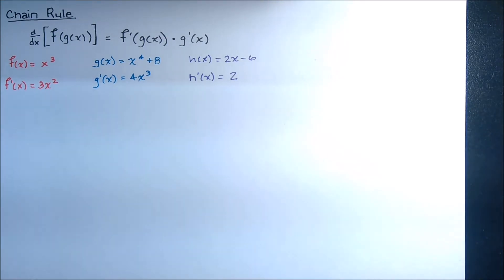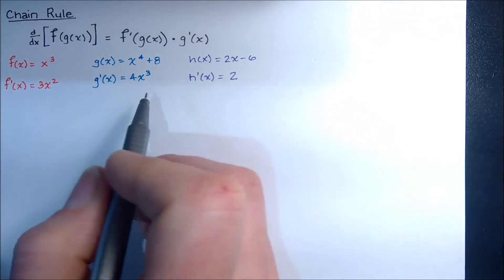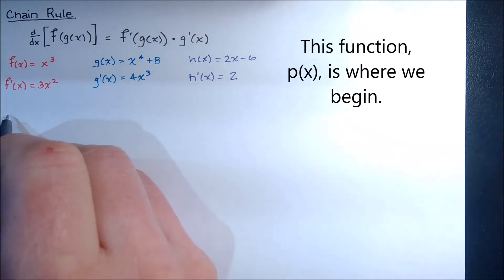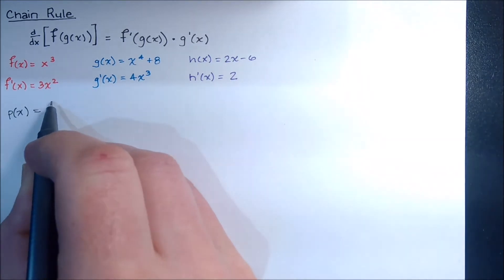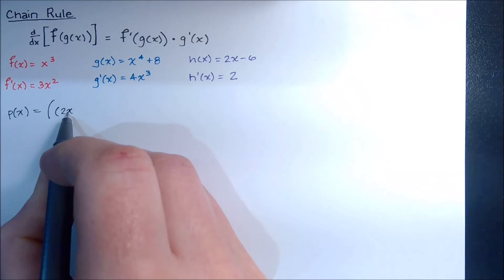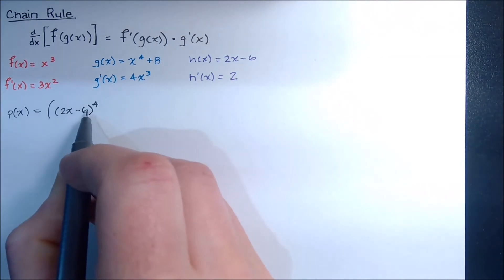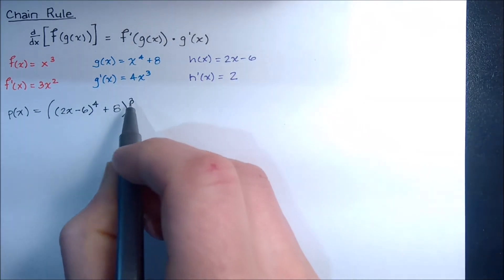Well, the chain rule says, what if I had some other function, some crazy function that was actually made up of all three of these or maybe even something crazier? So what we're doing is we're building this function and I'll call it p of x so we know it's something different. p of x, let's make it equal to 2x minus 6 raised to the 4th, add 8, and then we'll raise that whole thing to the third power.